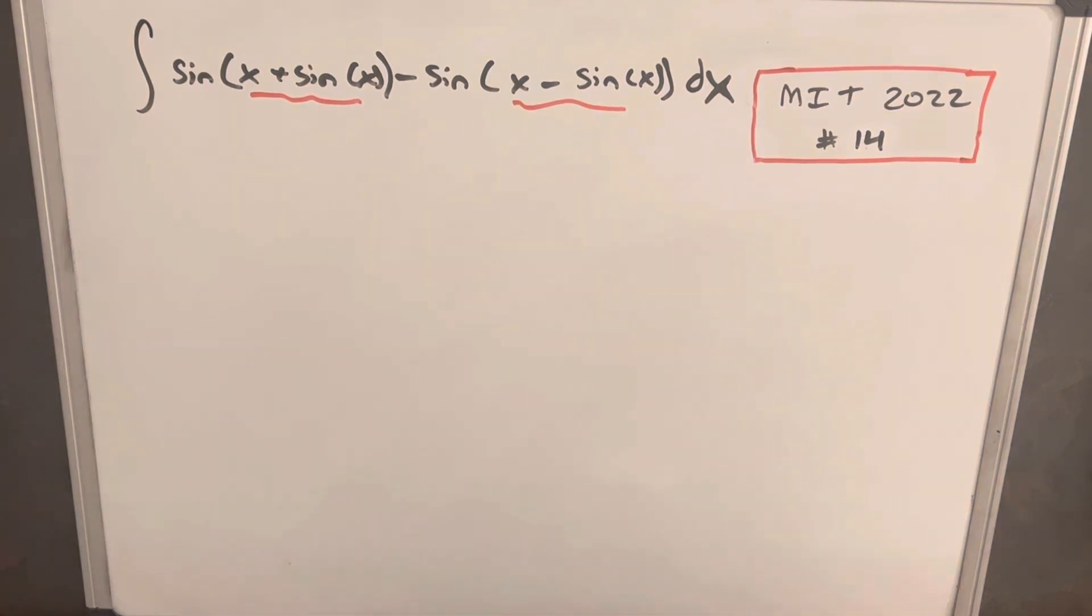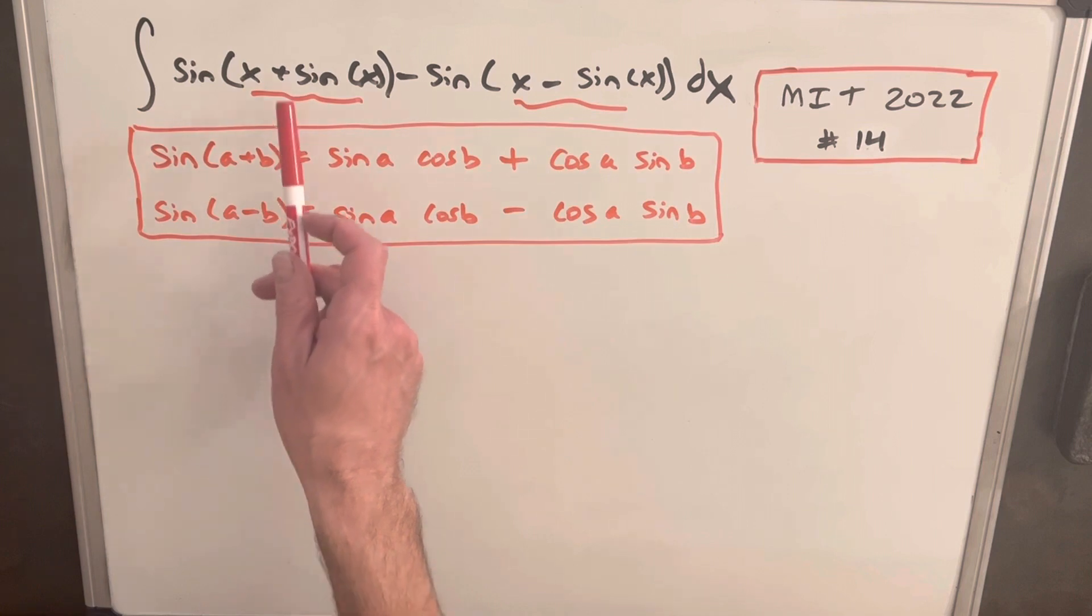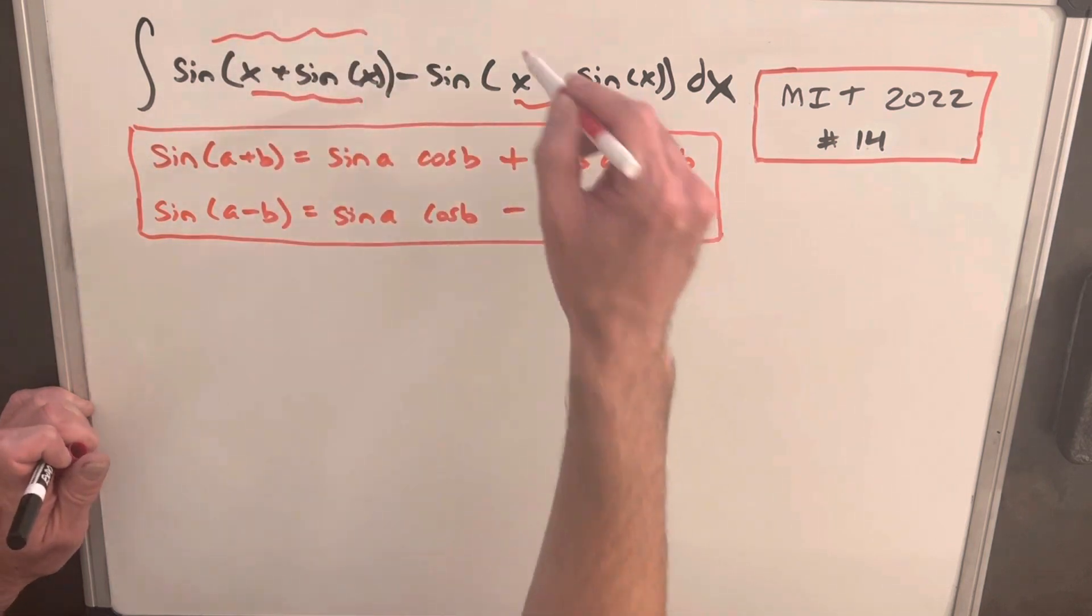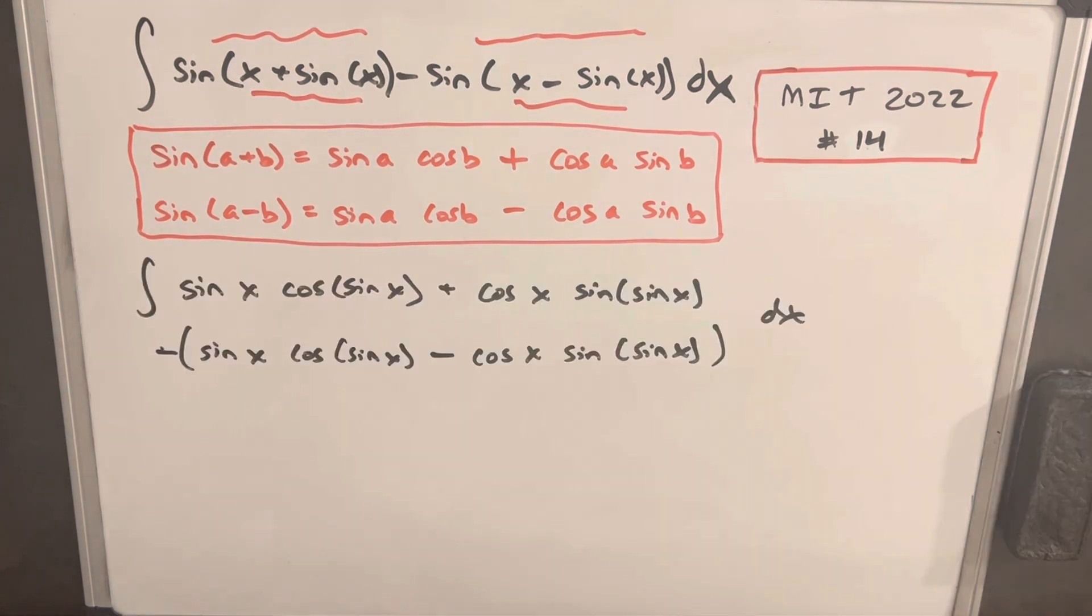Okay, so we have these two formulas: the angle sum and angle difference for sine on the board. You'll notice this is going to work out exactly what we want with both of our pieces. This first piece we can use angle sum, and the second piece we can use angle difference to rewrite our integral. Hopefully that will help, so let's do that.